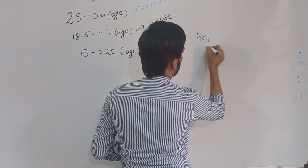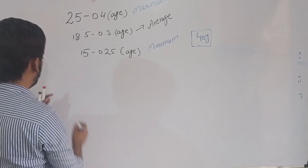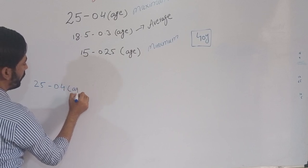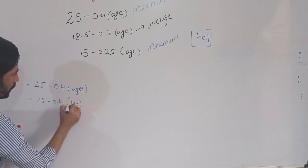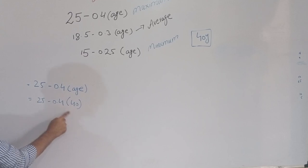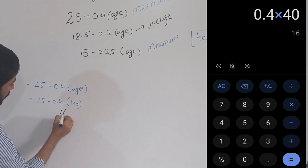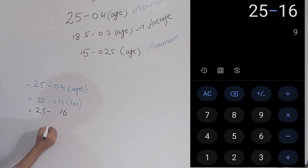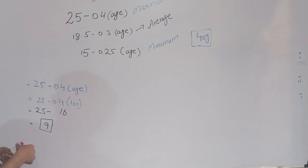For maximum amplitude of accommodation, the formula is 25 minus 0.4 times age. Our patient's age is 40 years. Multiplying 0.4 by 40 gives 16. Then 25 minus 16 equals 9. So at age 40, the maximum amplitude of accommodation is 9 diopters.